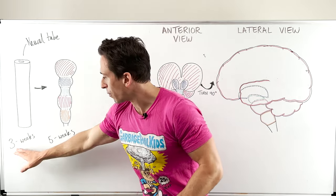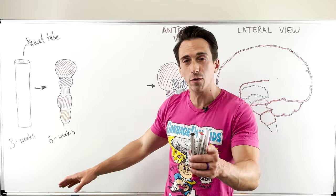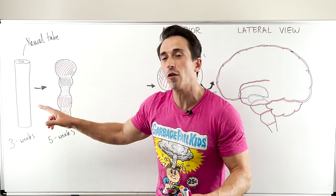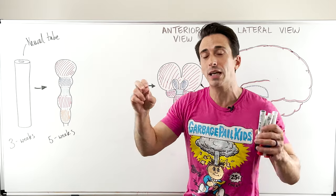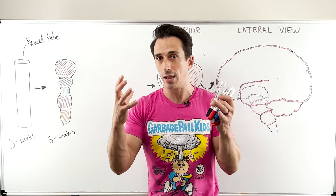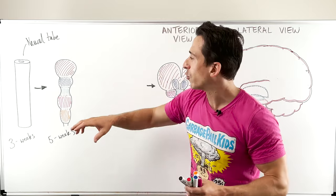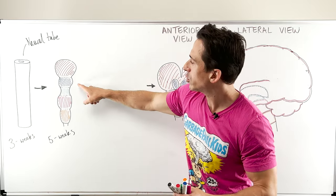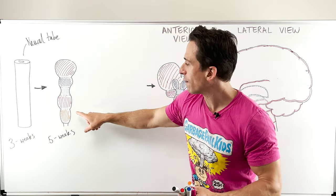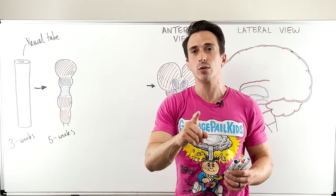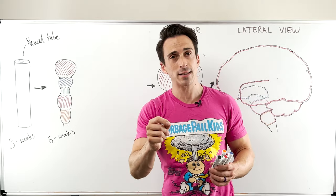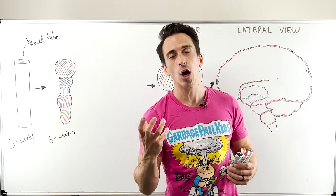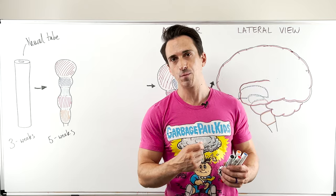From three weeks till around about five weeks, you'll find that various aspects of this tube begin to swell and they form vesicles. There are five vesicles that you need to understand because they become really important landmarks of the brain.